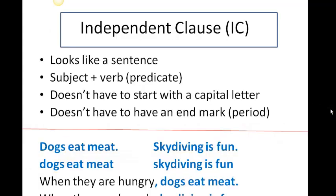Independent clauses look very much like a sentence. Just like a sentence, an independent clause has a subject and a verb. The only difference between a sentence and an independent clause is that an independent clause does not have to start with a capital letter and does not have to have an end mark.